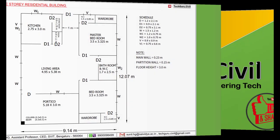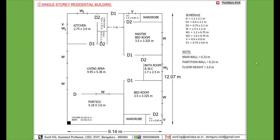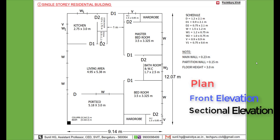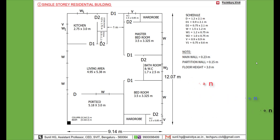In this tutorial, we are going to deal with the single story residential building — how to draw the plan, front elevation, and sectional elevation in AutoCAD recent version. Here is the line diagram.